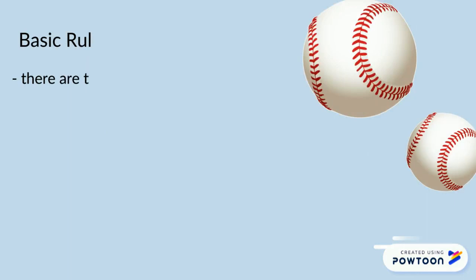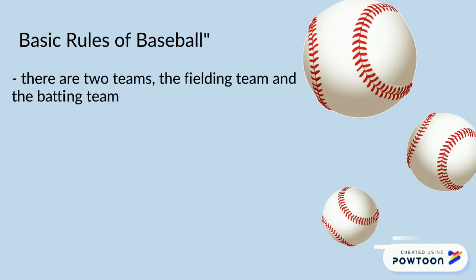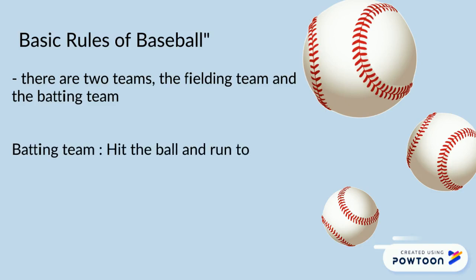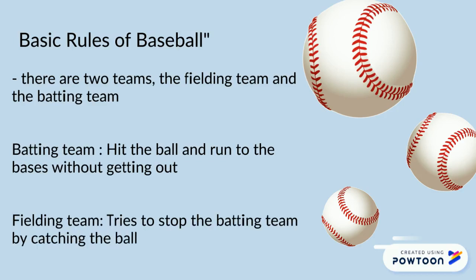Basic rules of baseball. There are two teams: the fielding team and the batting team. They will rotate in these positions. Each team is trying to get as many home runs as possible. If the batters get three players out, the positions switch from batting to fielding and fielding to batting.